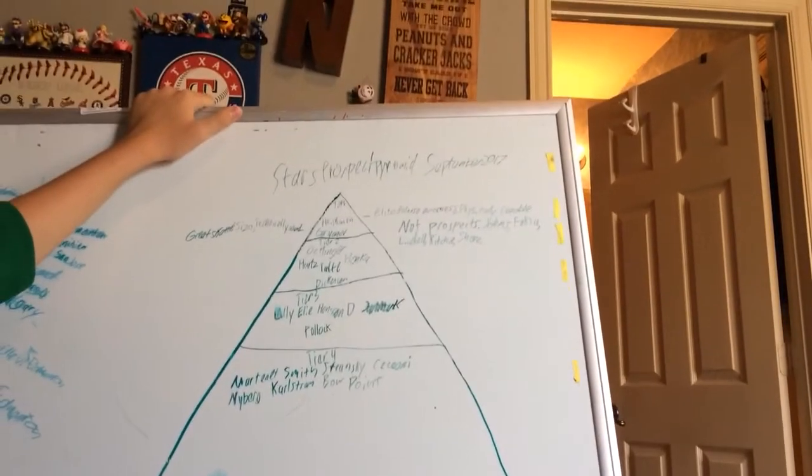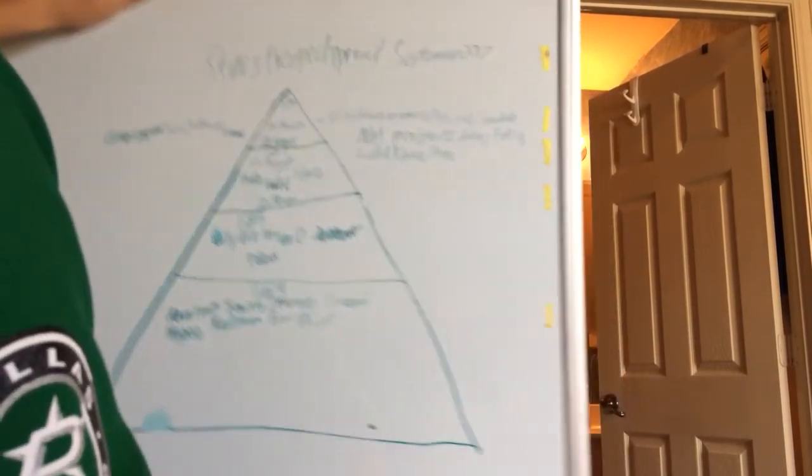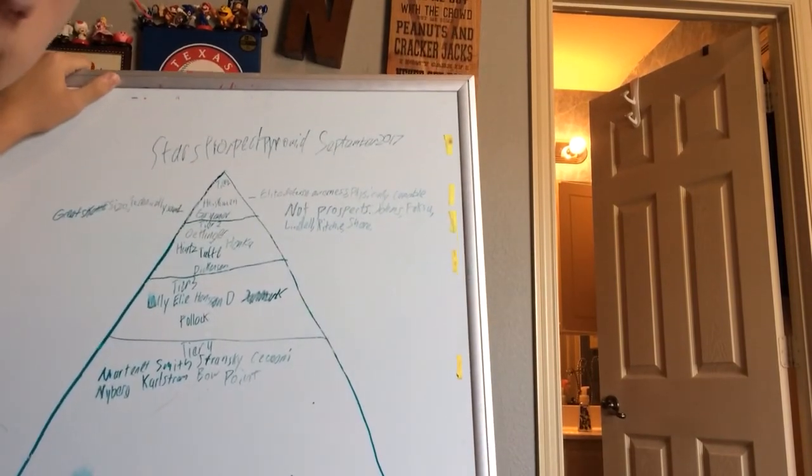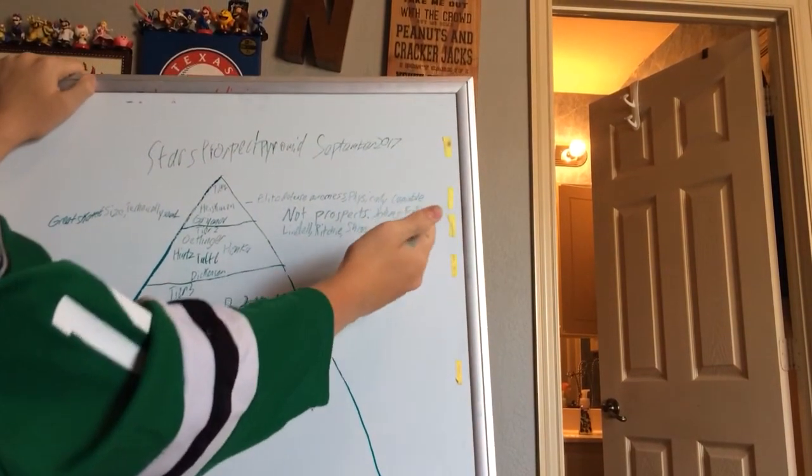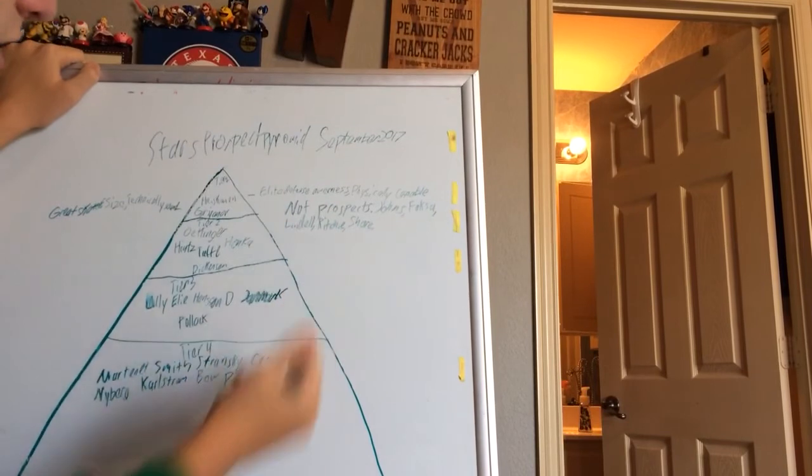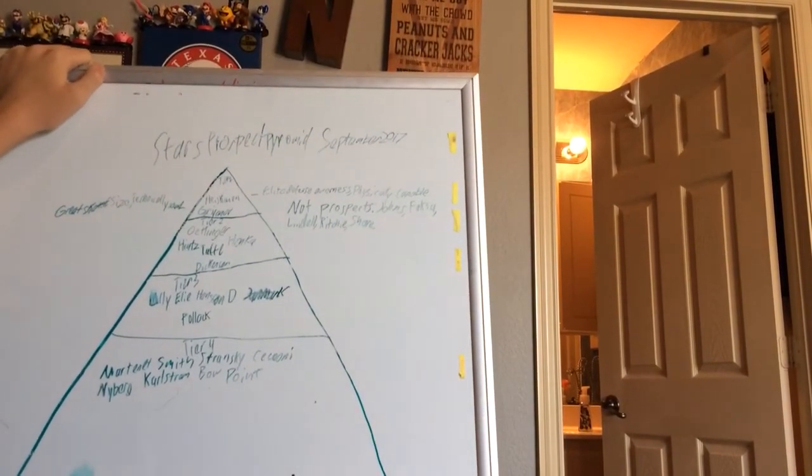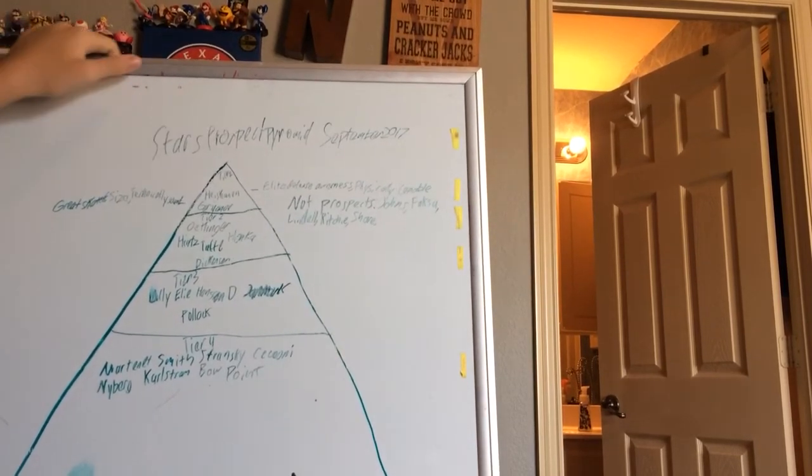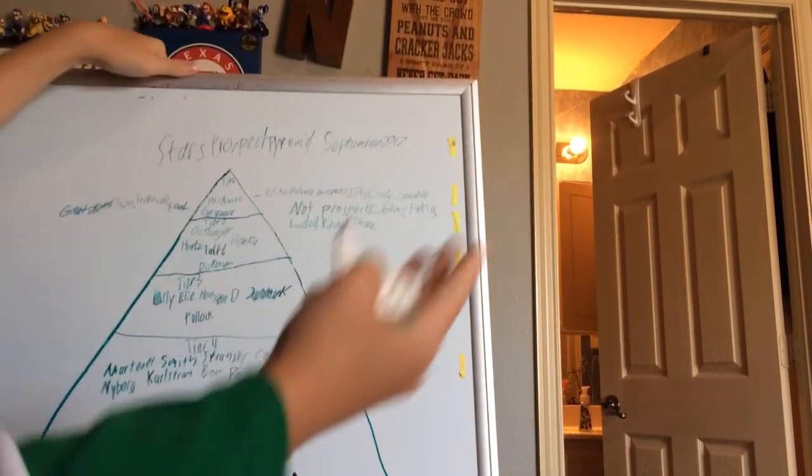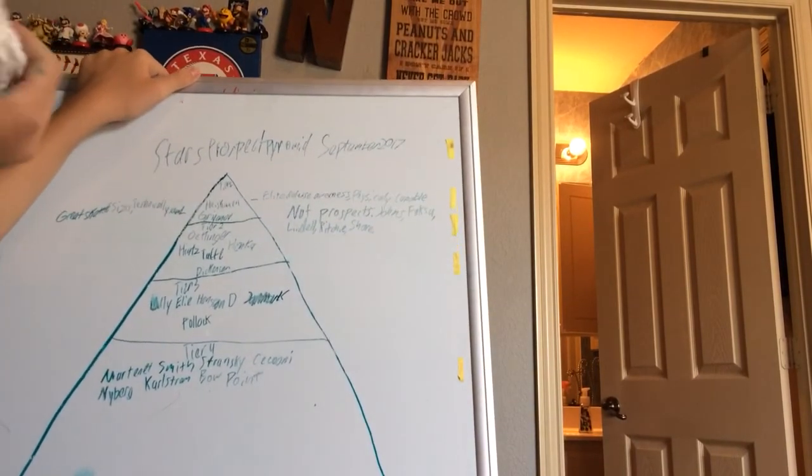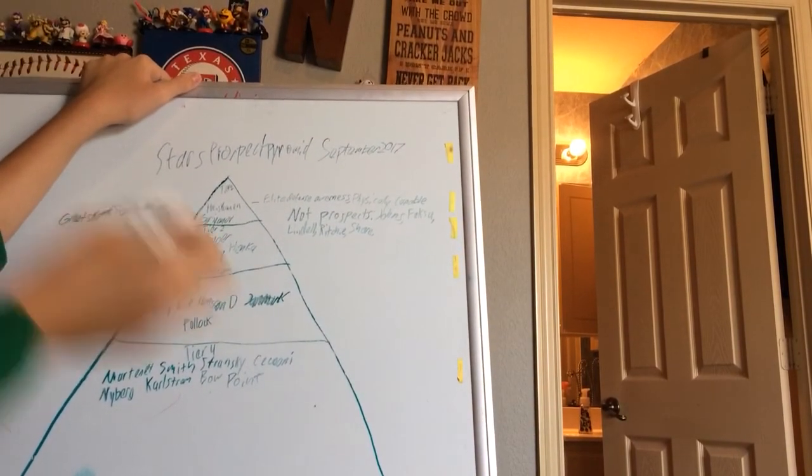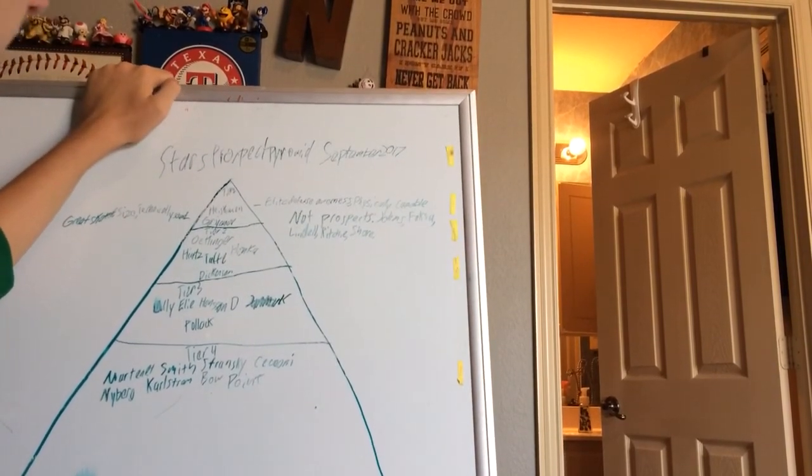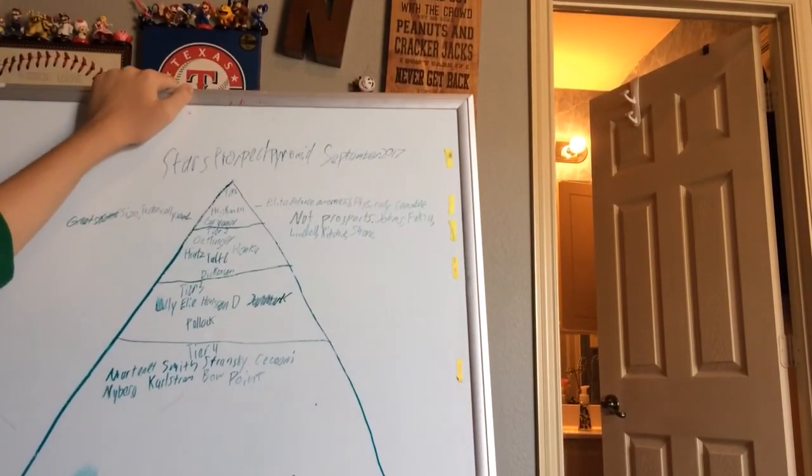And of course, if you're thinking, oh, why isn't Faksa on the list? Because he's not a prospect. Guys like Josh, Faksa, Lindell, Ritchie, and Shore all have enough playing time where I think they're not prospects. They play too much to be prospects. I don't know how you put any of these guys as prospects still. And even if you did, Faksa would probably be tier 1 in my opinion. I think Faksa's going to be elite, but that's just my opinion.